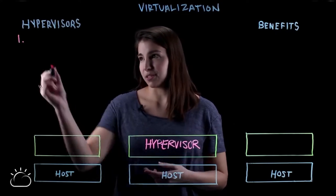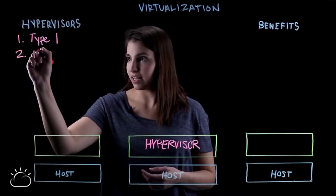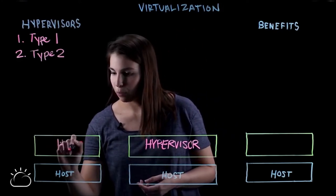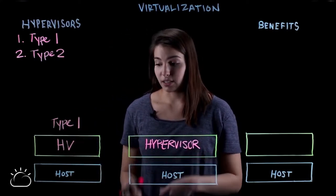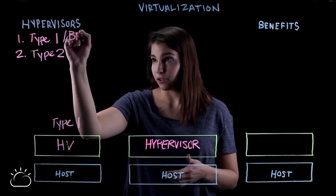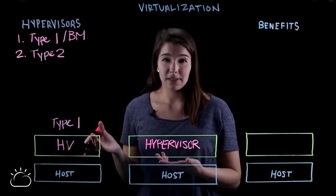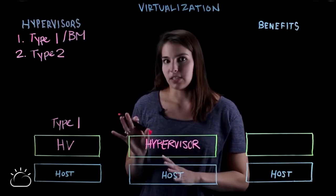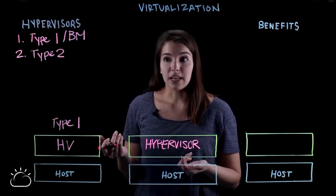There are two main types of hypervisors: type one and type two. A type one hypervisor is installed directly on top of the physical server. They're also called bare metal hypervisors. These are the most frequently used type of hypervisor, they're the most secure, and they lower the latency. Some examples would be VMware ESXi, Microsoft Hyper-V, or even open source KVM.